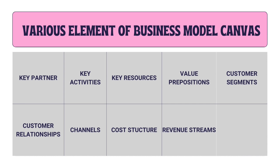There are various elements in the Business Model Canvas: key partners, key activities, key resources, value proposition, customer segments, customer relationship, channels, cost structure, and revenue streams.